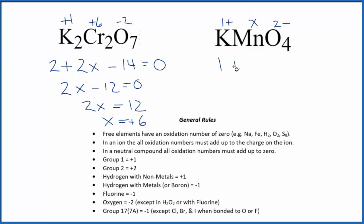So 1 plus X, 4 times negative 2, so minus 8 equals 0. X is going to equal 7, positive 7.